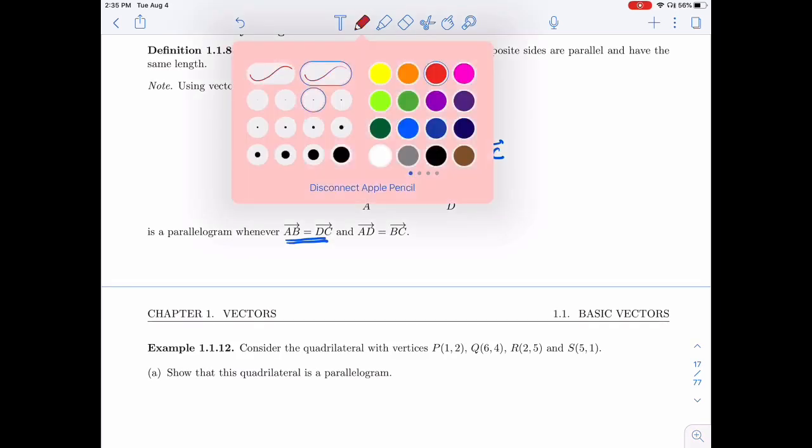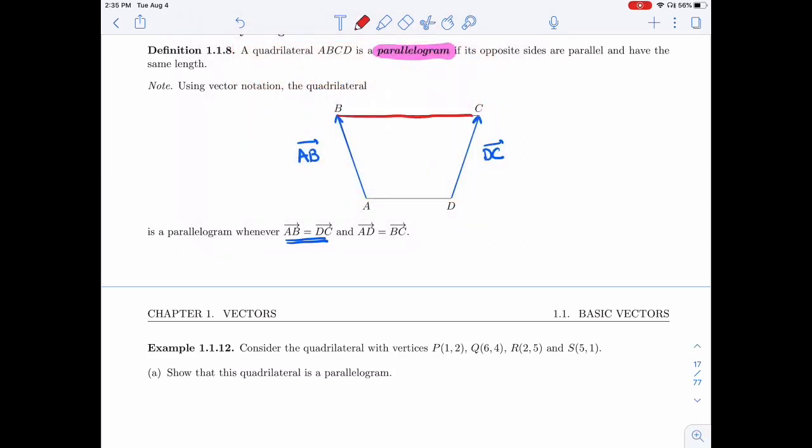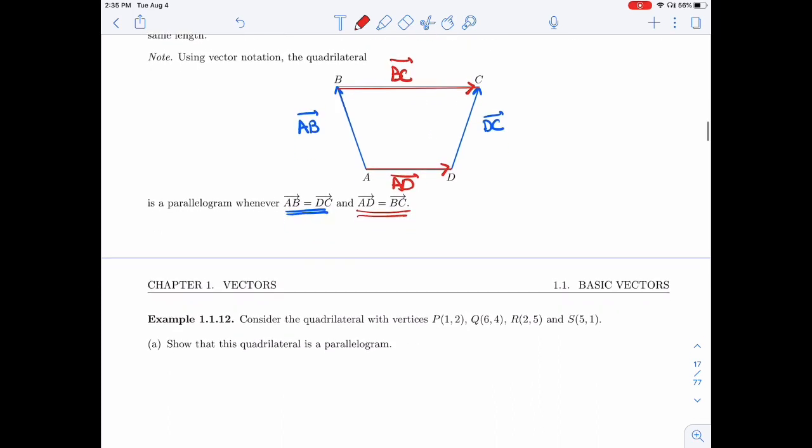Similarly, for the other two sides, if I look at BC and I look at AD, BC and AD, if I want this to be a parallelogram, need to have the same length and the same direction because they're parallel, so AD should be equal to BC. Let's try that.